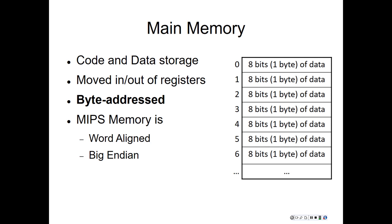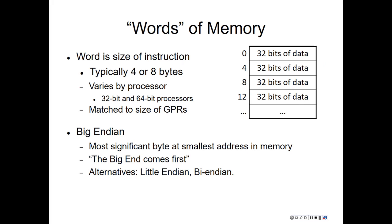In MIPS, memory is word-aligned and big-endian. A word is the size of an instruction in the processor. This is usually four or eight bytes depending on the type. A 32-bit architecture uses four-byte words, while a 64-bit processor uses eight-byte words.